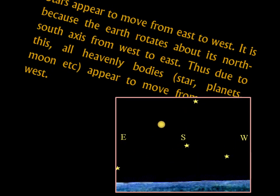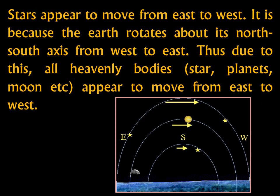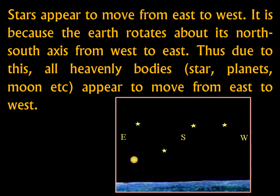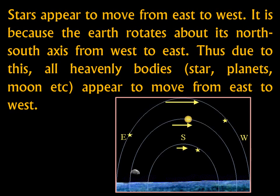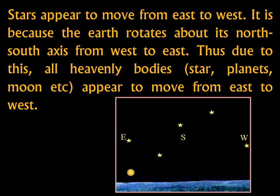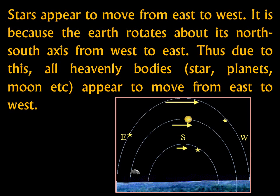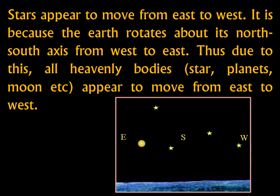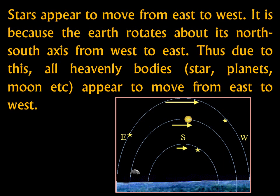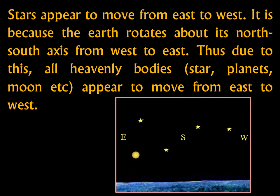You all learned in your primary classes that the sun rises in the east and sets in the west. Is it true? You know that when we are traveling in a train, things outside appear to move backwards — opposite to the direction of your motion. But are they actually moving? No. They are not moving backwards; you just feel that way because of your forward movement in the train. Similarly, the sun and all other stars appear to move from east to west because of the rotation of the Earth on its north-south imaginary axis from west to east. As it rotates from west to east, all heavenly bodies appear to move from east to west.